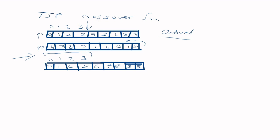For mutation in TSP, you can't just change a city value to a random number. Instead, you select two positions and swap them — for example, take city seven and city one and swap their positions, or take adjacent cities three and five and swap them. So mutation swaps positions, and crossover uses the ordered approach.